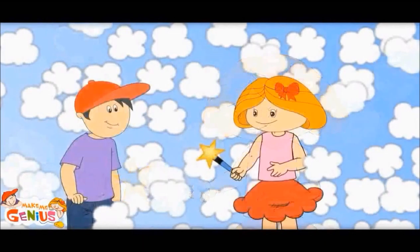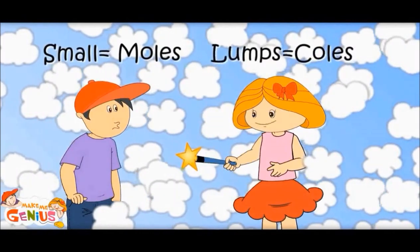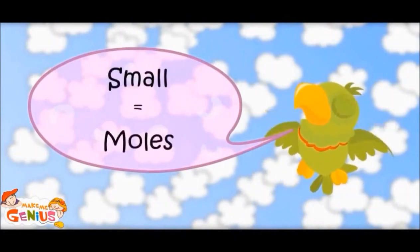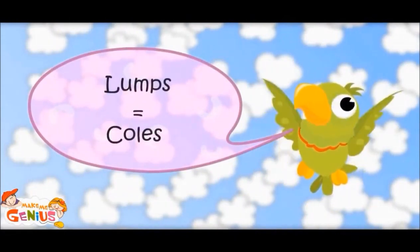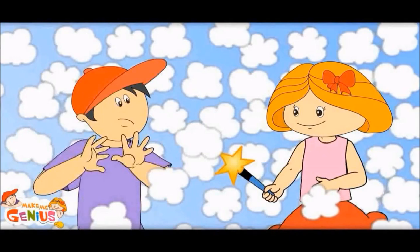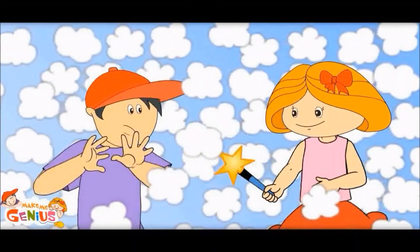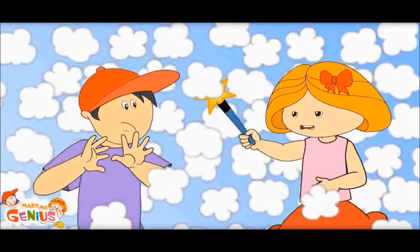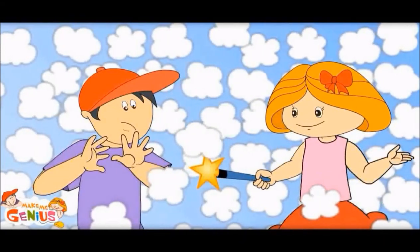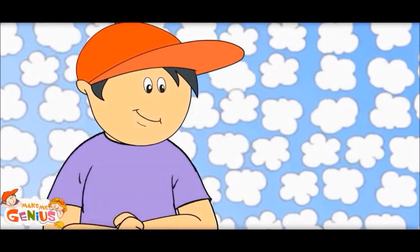What are these small things? These are small lumps — everything in the world is made of small molecules. In Greek, 'small' is 'moles' and 'lumps' is 'coals,' so small lumps are called molecules. It is very tight here — I can't even move my hands. Molecules in solid are very close to each other and have less space to move, so they move very slowly.